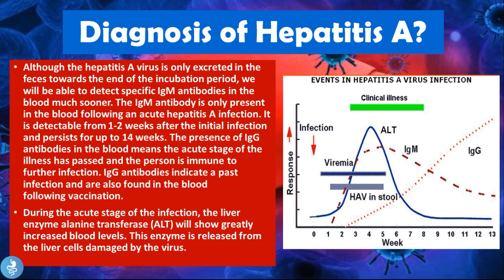For diagnosis, although the hepatitis A virus is only excreted in the feces towards the end of the incubation period, we can detect specific IgM antibodies in the blood much sooner. The IgM antibody is only present following an acute hepatitis A infection, detectable from one to two weeks after initial infection and persisting up to 14 weeks. The presence of IgG antibodies means the acute stage has passed and the person is now immune. During the acute stage, the liver enzyme alanine transferase (ALT) will show greatly increased blood levels, as it is released from liver cells damaged by the virus.